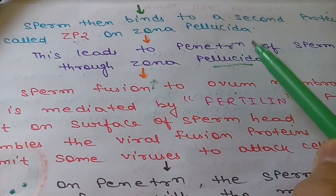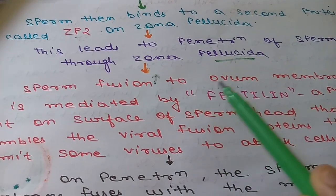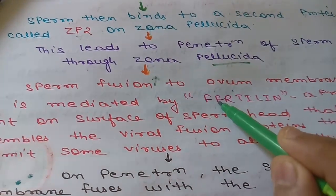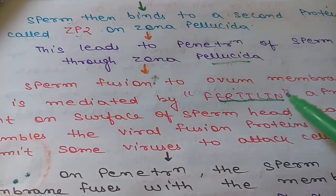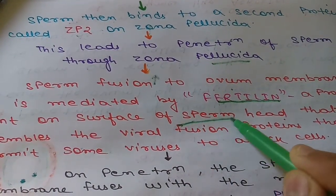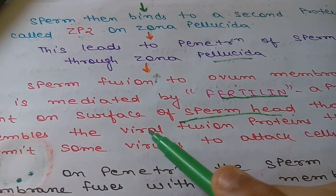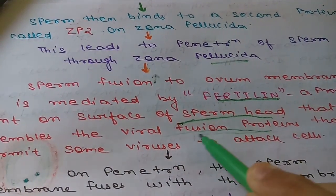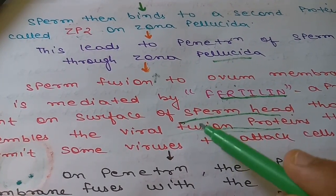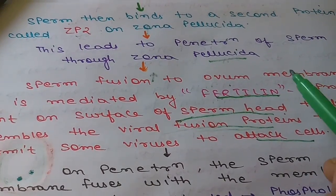On binding to ZP3 the acrosomal reaction starts, and on binding to ZP2 it leads to penetration of the zona pellucida. The sperm then reaches the ovum cell membrane and fusion of the sperm membrane with the ovum membrane occurs. This fusion is mediated by a protein known as fertilin, which is present on the surface of the sperm head and resembles viral fusion proteins.